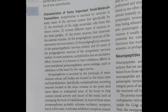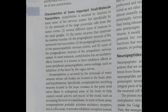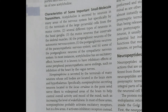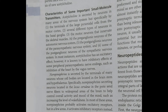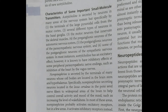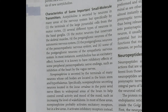Characteristics of some important small molecule transmitters: this section describes the functions and secretion sites of different neurotransmitters — including acetylcholine, norepinephrine, dopamine (very important with significant pathological implications), glycine, GABA, glutamate, serotonin, and nitric oxide. It is important to know these names to classify neurotransmitters under specific headings.